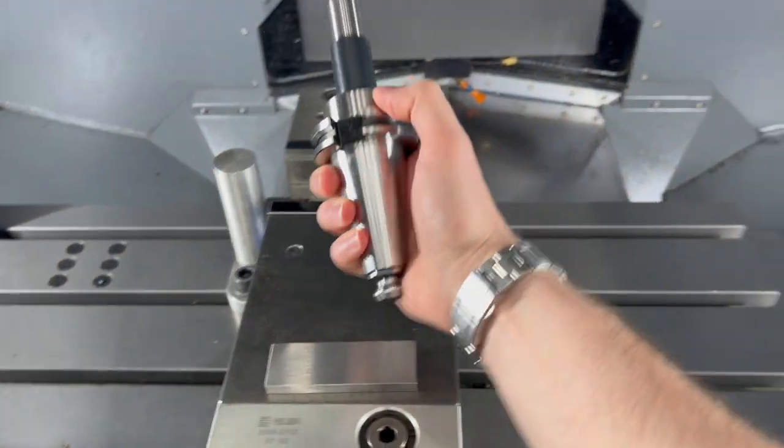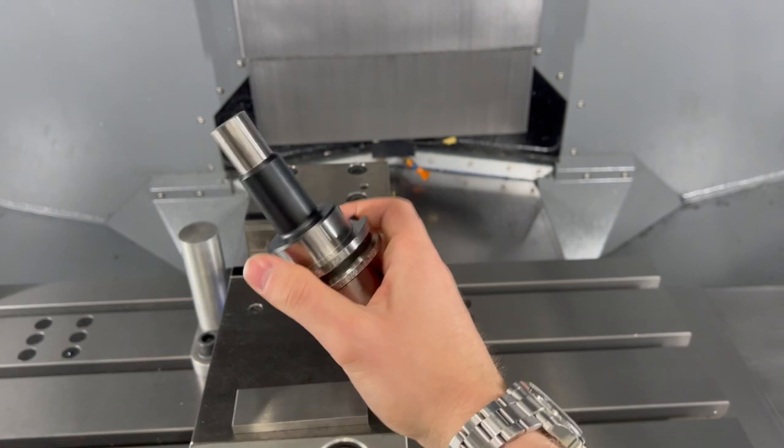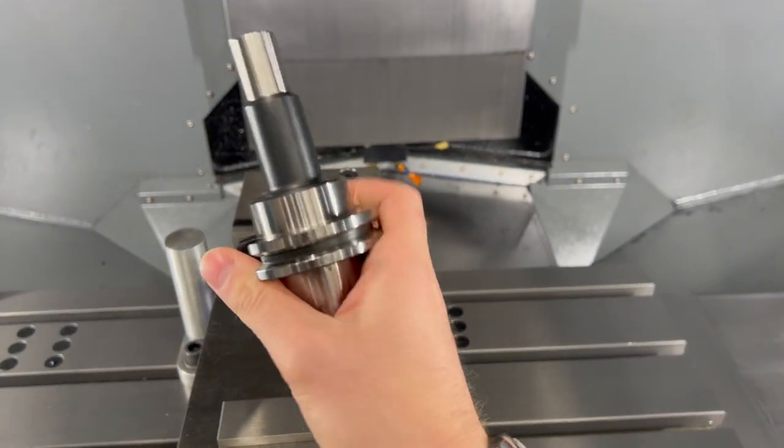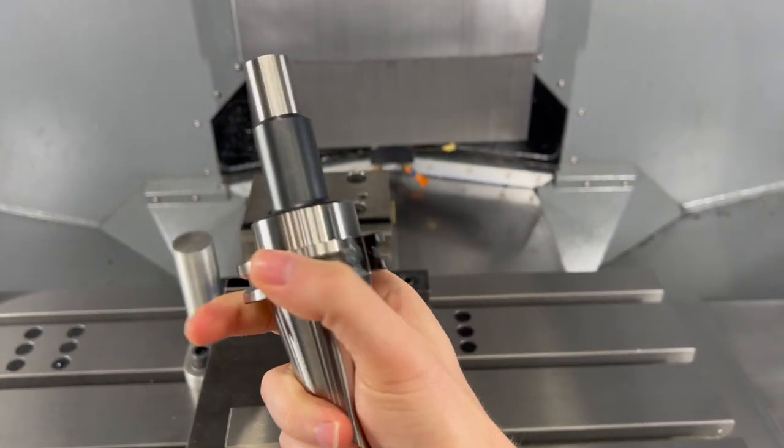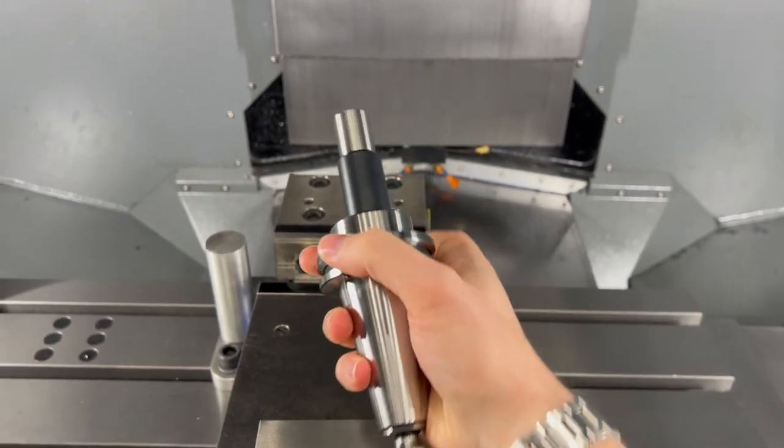And the next thing you'll need is a tool of a known length. Now we have this mandrel which has some figures engraved on it with the length and diameter.